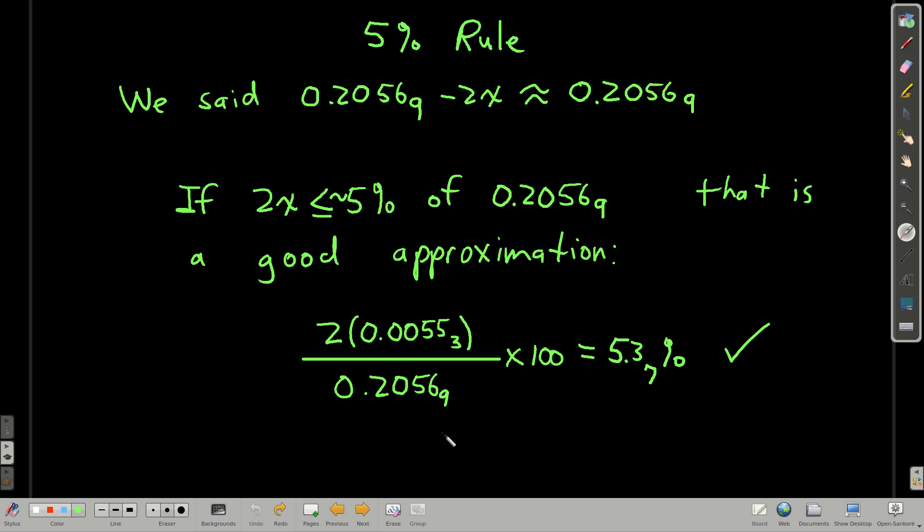So now let's check, okay? Here's the 5% rule, another kind of tip. When we're neglecting a term in our equation, if that term is less than about 5% of the term we're comparing it to, so in this case, if 2x is less than or equal to about 5% of 0.2057, we'll call that a good approximation. So let's check. So x was 0.0055 or so. Compare that to 0.2057, so 2 times that, divided by 0.2057 times 100, we'd get 5.4%. That's about 5%, so we'll call that good.